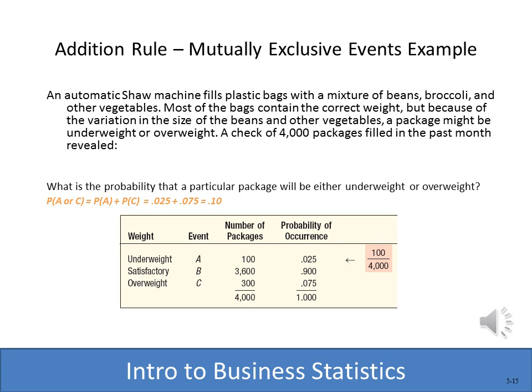Here's an example of mutually exclusive events. We have a slaw machine that fills plastic bags with vegetables. From a sample of 4,000 packages, 100 have been underweight and 300 have been overweight. To find the probability of a package being either underweight or overweight, P(A or C) = P(A) + P(C), which is 0.025 plus 0.075, giving us 0.1. So the probability of either underweight or overweight is 0.1.